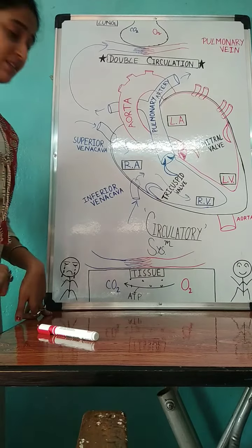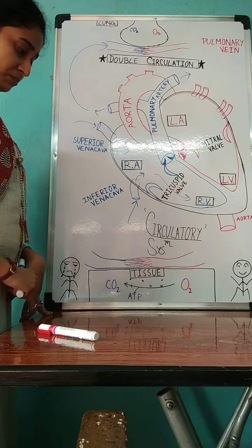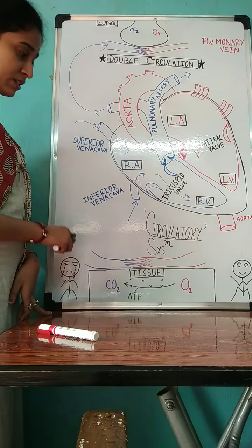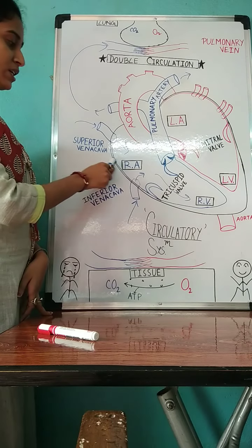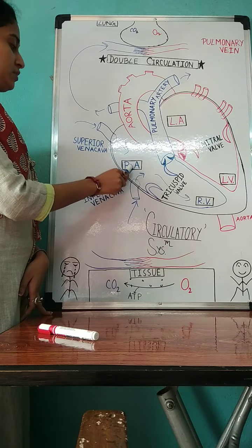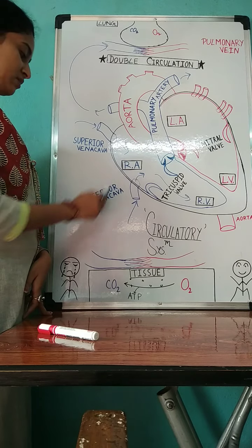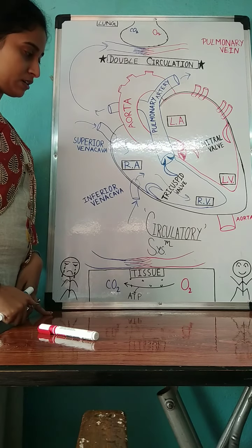Now let us see how does it work. The deoxygenated blood from all over the body comes into the right atrium via superior vena cava and inferior vena cava.